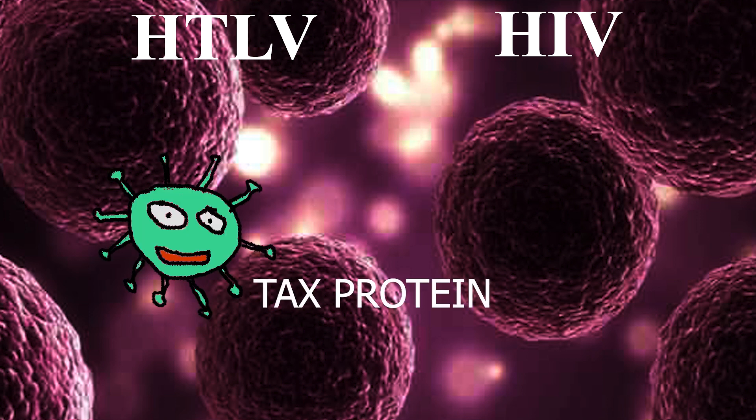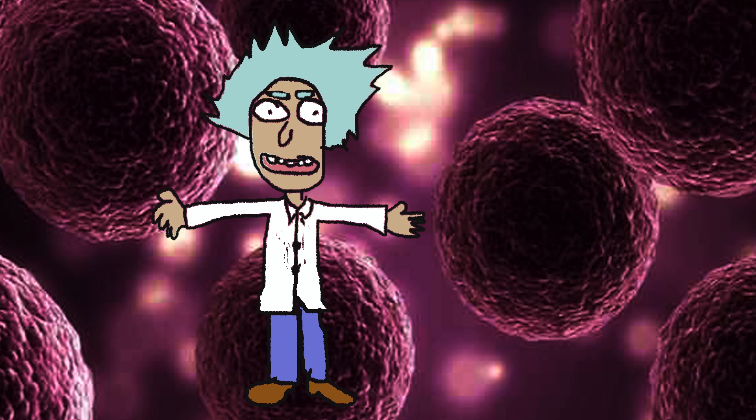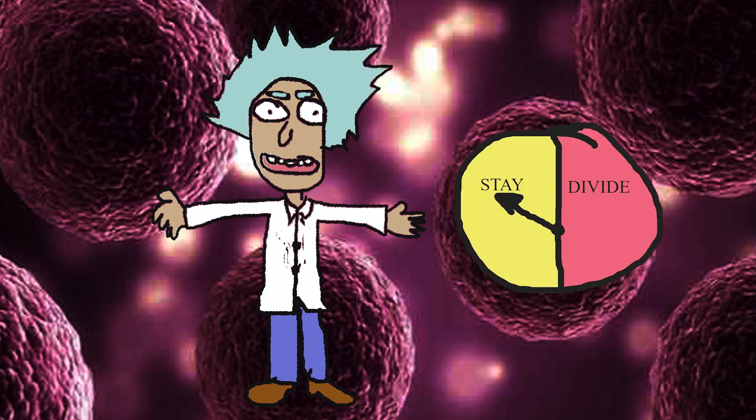HTLV has something HIV doesn't have: Tax protein. Tax is a key protein that turns the cells into tumor cells. Can you give me the simple version? This virus uses Tax to block the cell clock.